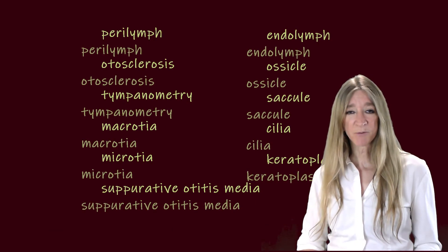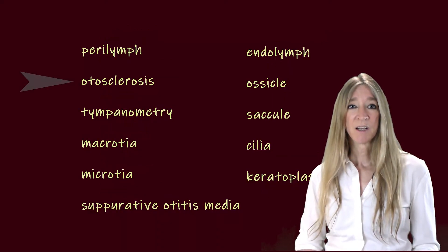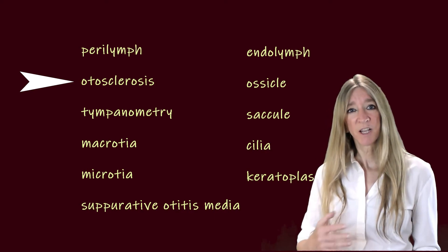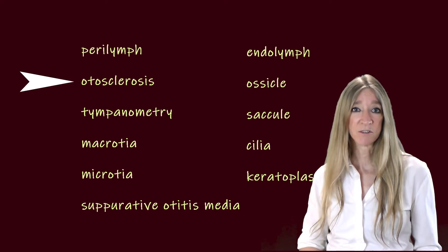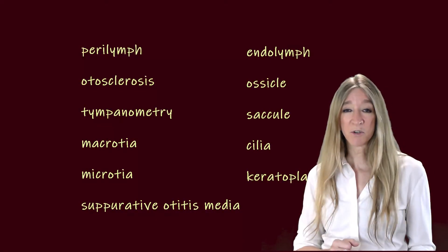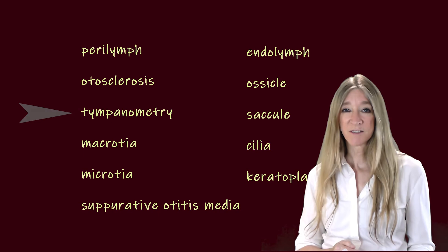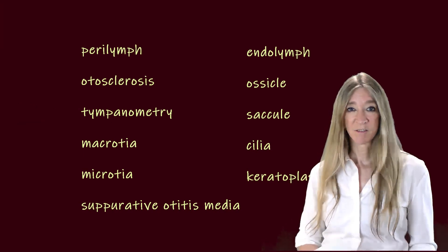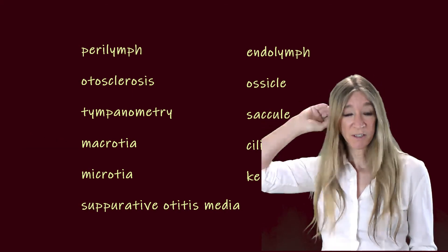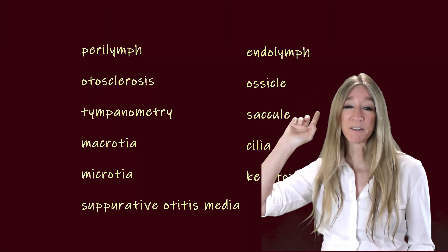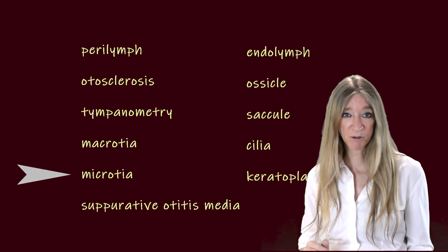How about a term for abnormal bone remodeling in the middle ear? That's otosclerosis. Sclera we know means hard — sclerosis is abnormal hardening of any body tissue. And a term for measurement of the function and action of the eardrum and middle ear? Tympanometry. How about oversized outer ears? The outer ear is the part you see — macrotia. And how about a term for a birth defect in which one or both of the outer ears do not form fully or do not form at all? Microtia.